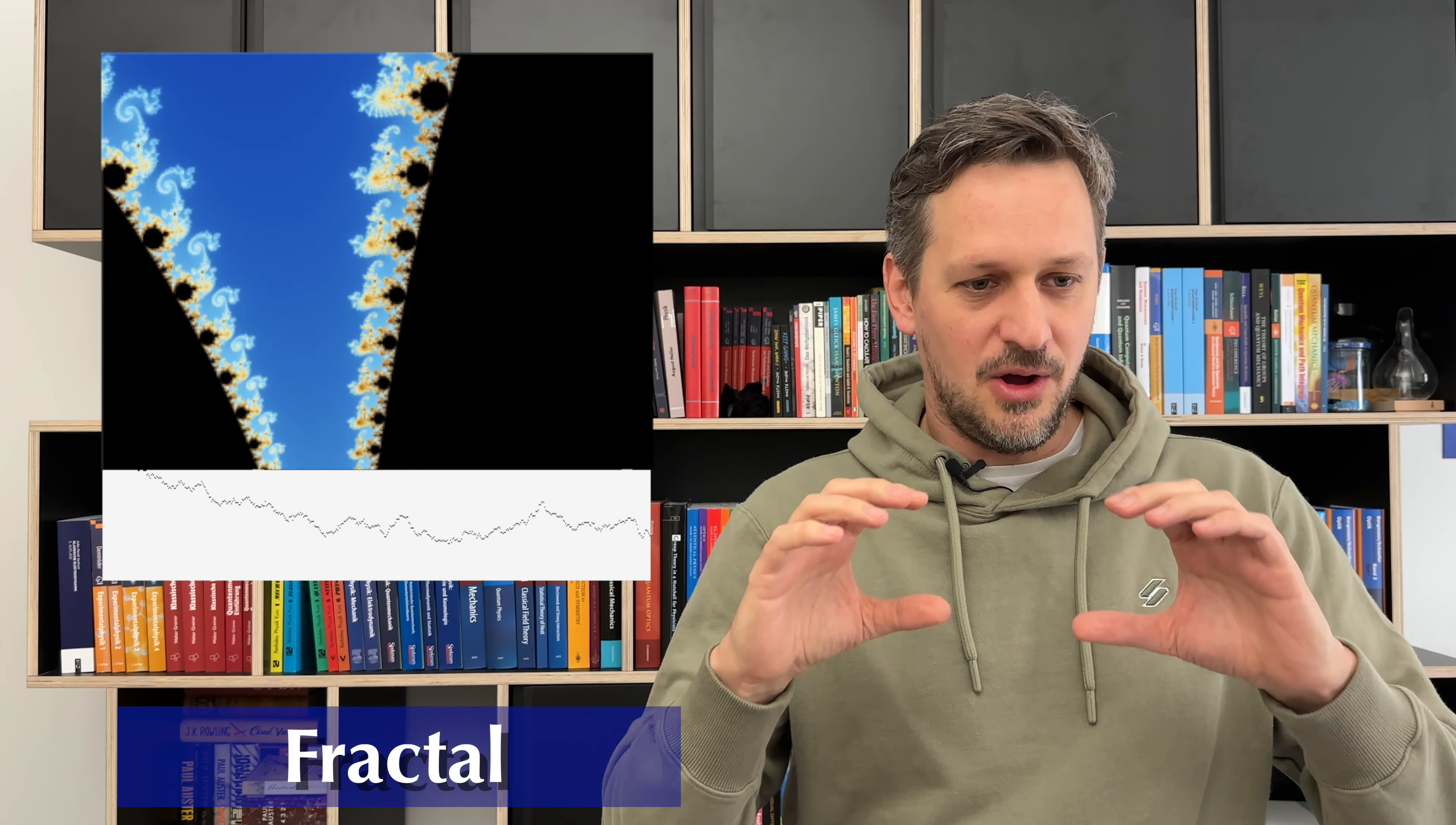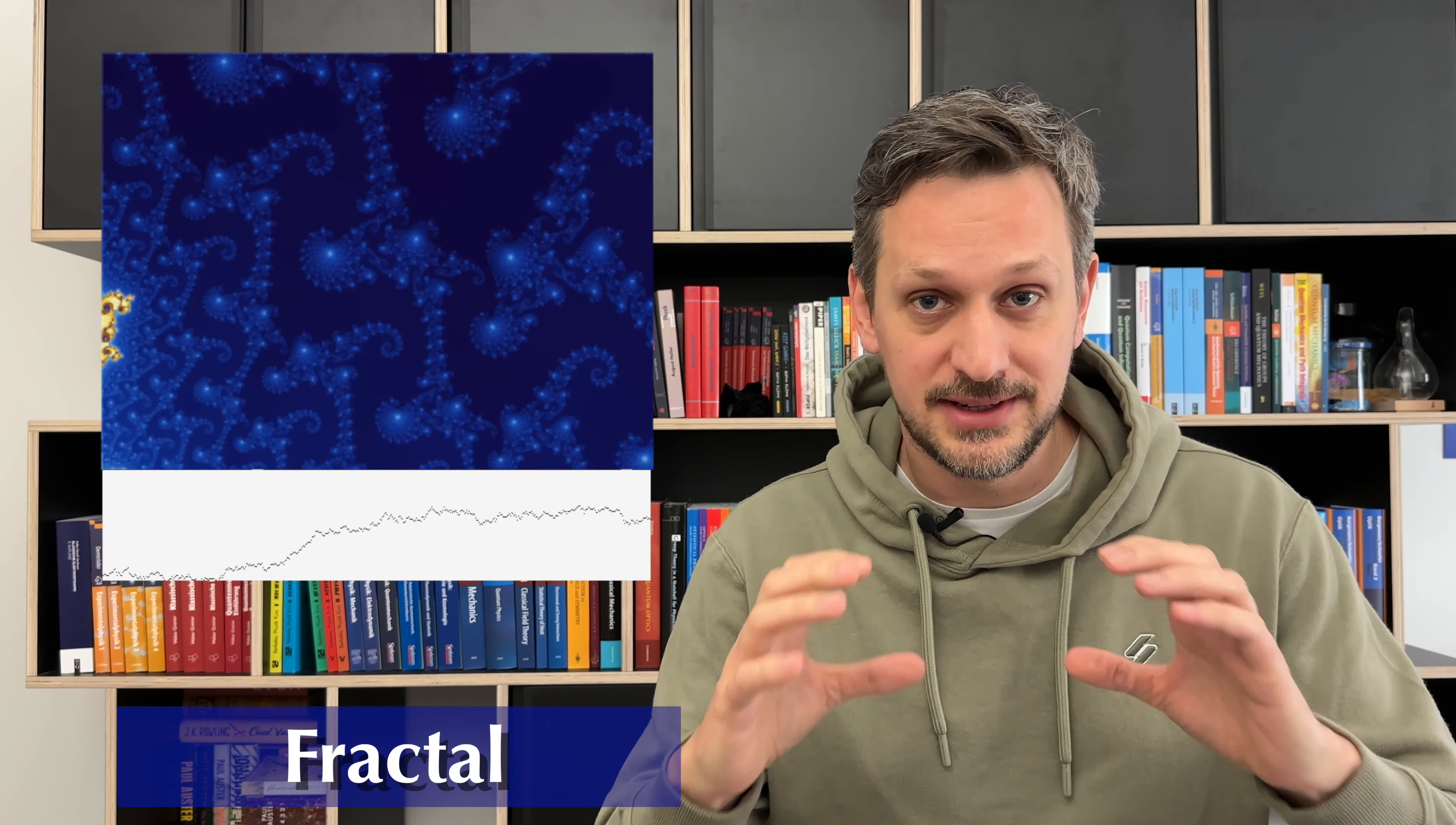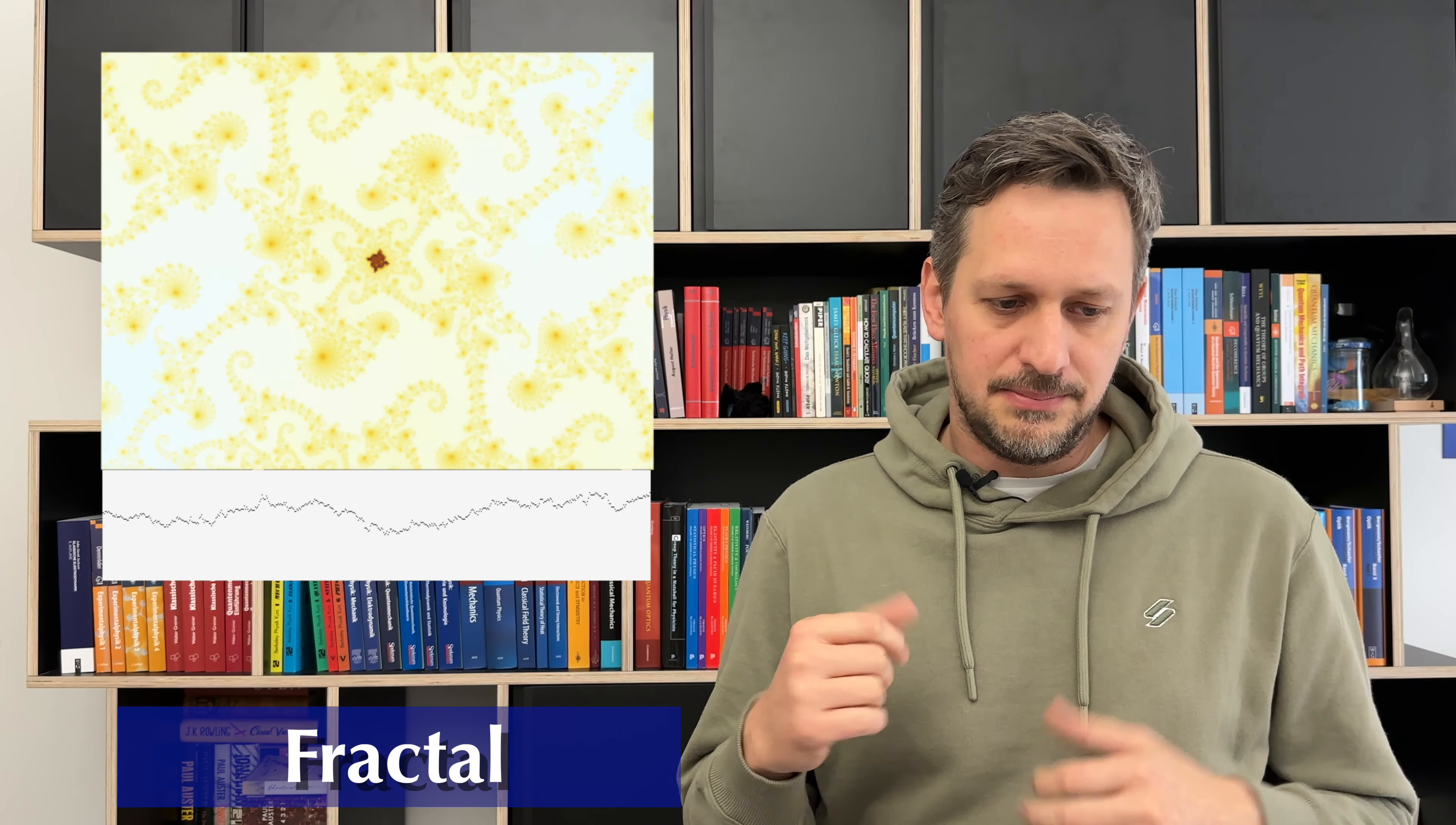And if you zoom in on the boundary, all you get is more complexity. You get self-similarity. You get self-replicating of the patterns. So, you have an intricate pattern and you zoom in and all you get is even more intricate pattern. It never becomes simple or clear-cut. It's complexity all the way down.